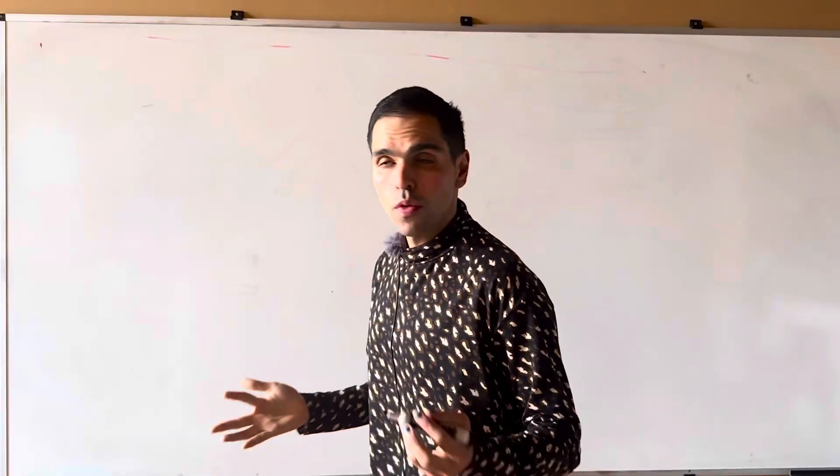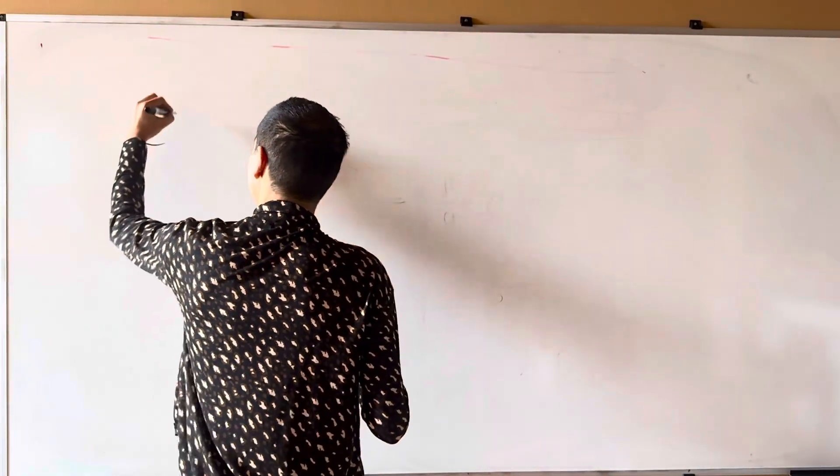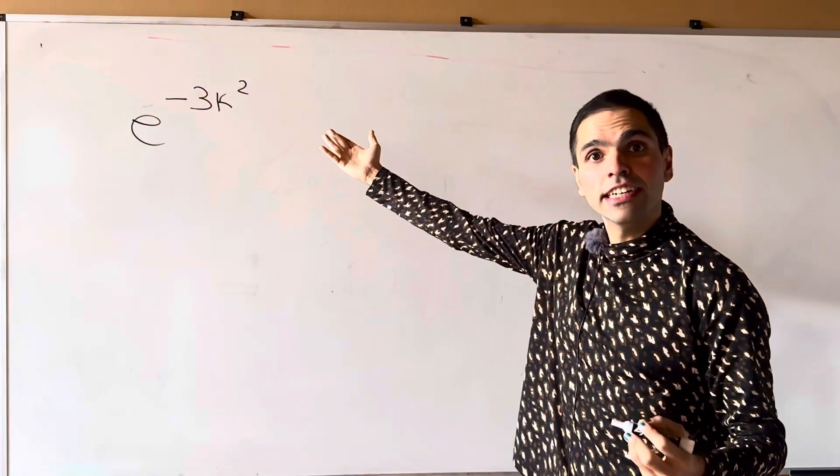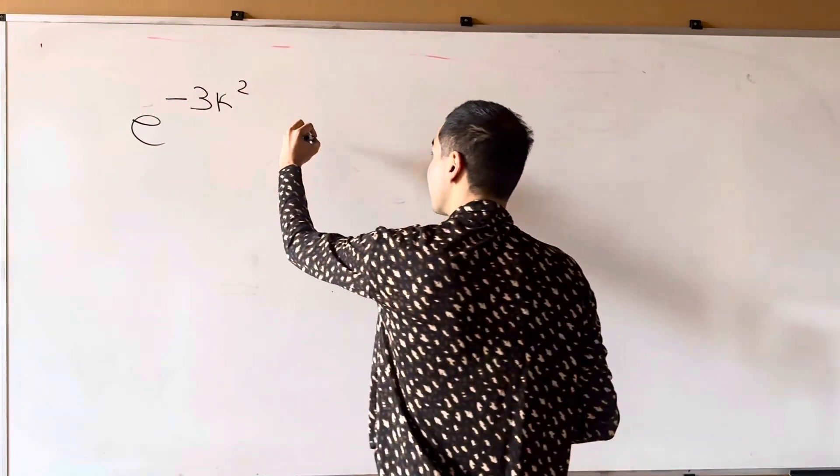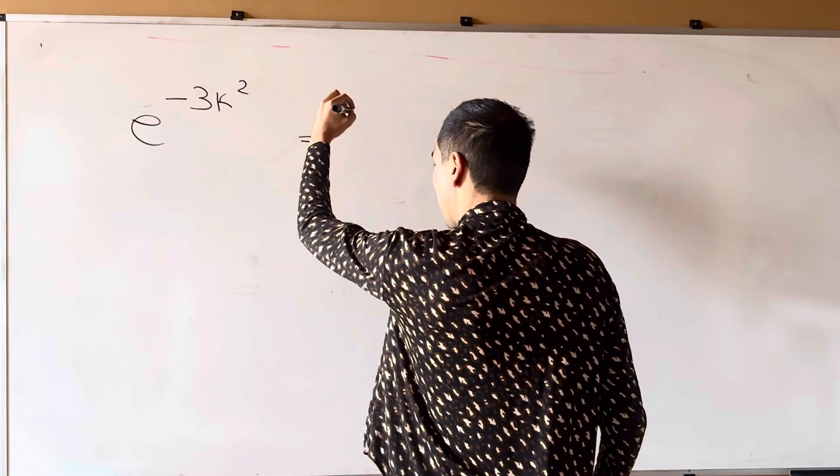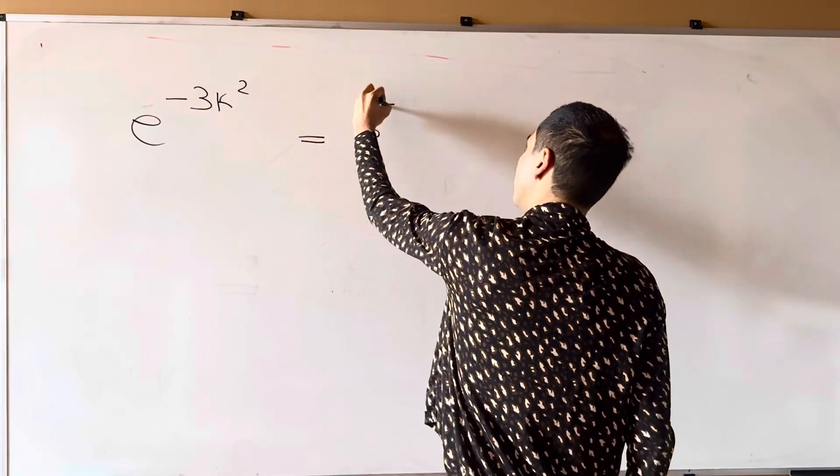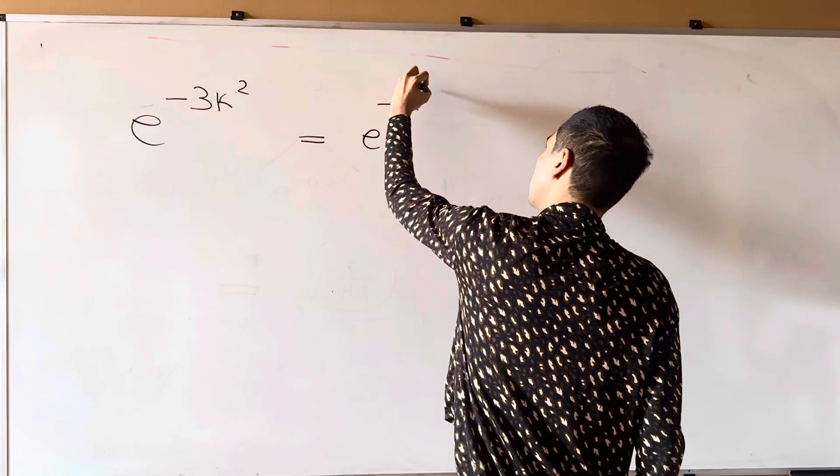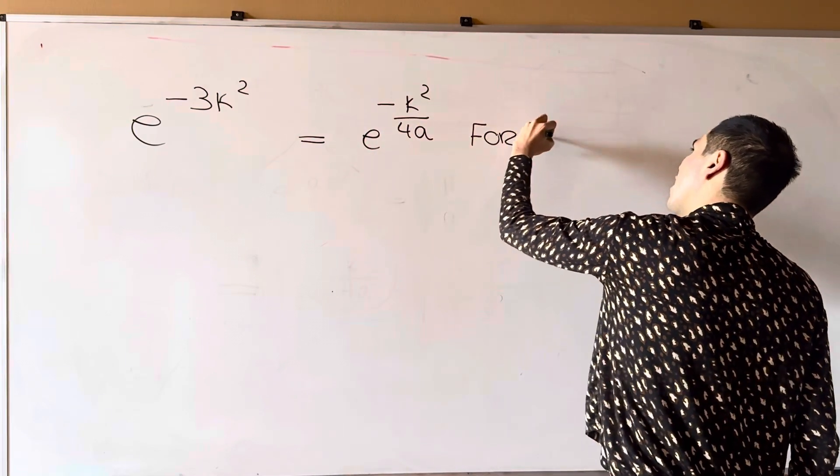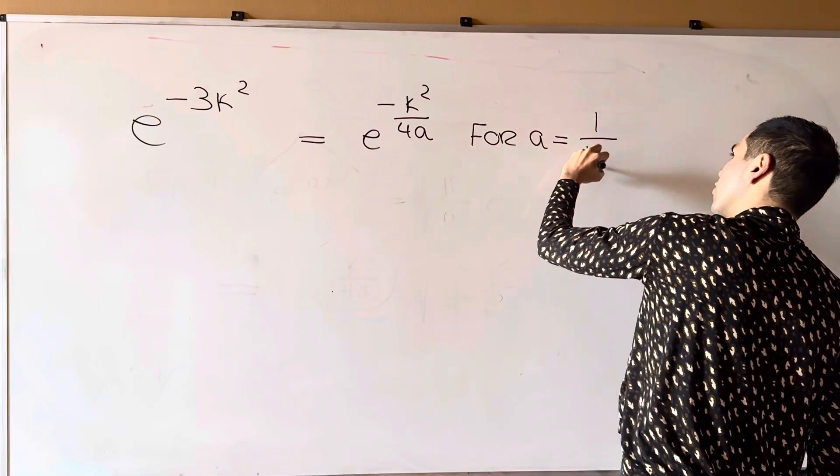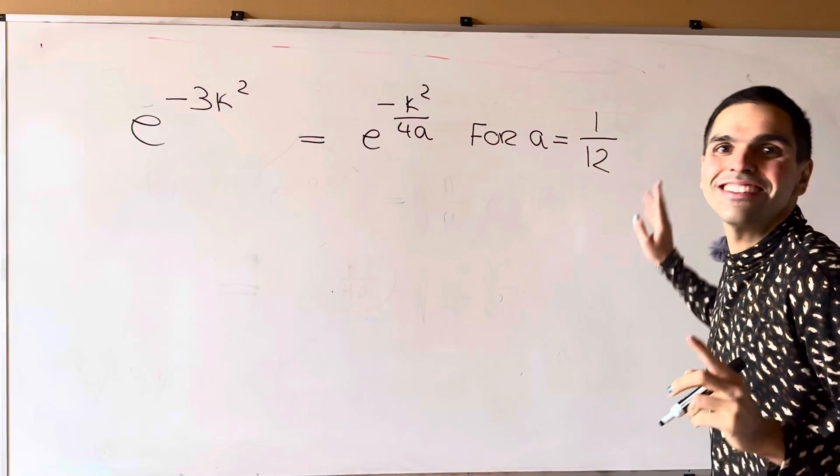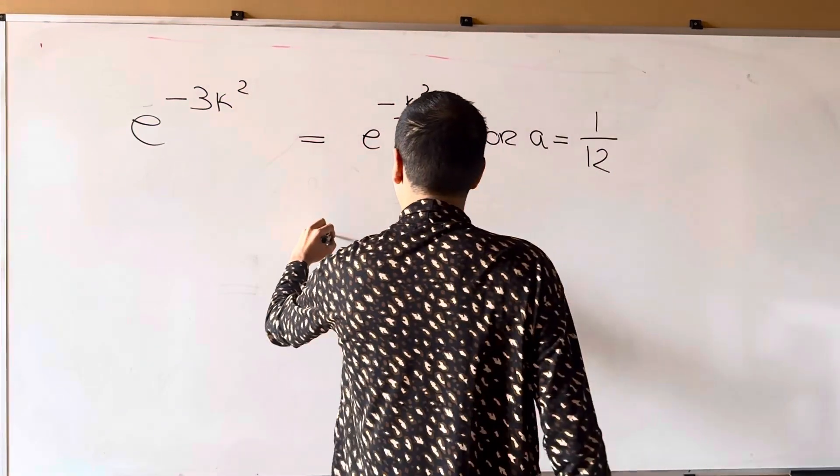we then get so once again, we have e to the minus 3 kappa squared. Again, the idea is you want to write this as a hat, but we know that this is the same as e to the minus kappa squared over 4a. 4a is 1 over 12. The sum of the harmonic series. Just kidding.